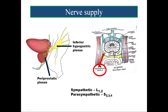This neurovascular bundle should be kept in mind while doing prostatectomy, because injury to this bundle can result in impotence due to loss of nerve supply to various other organs supplied by these nerves.